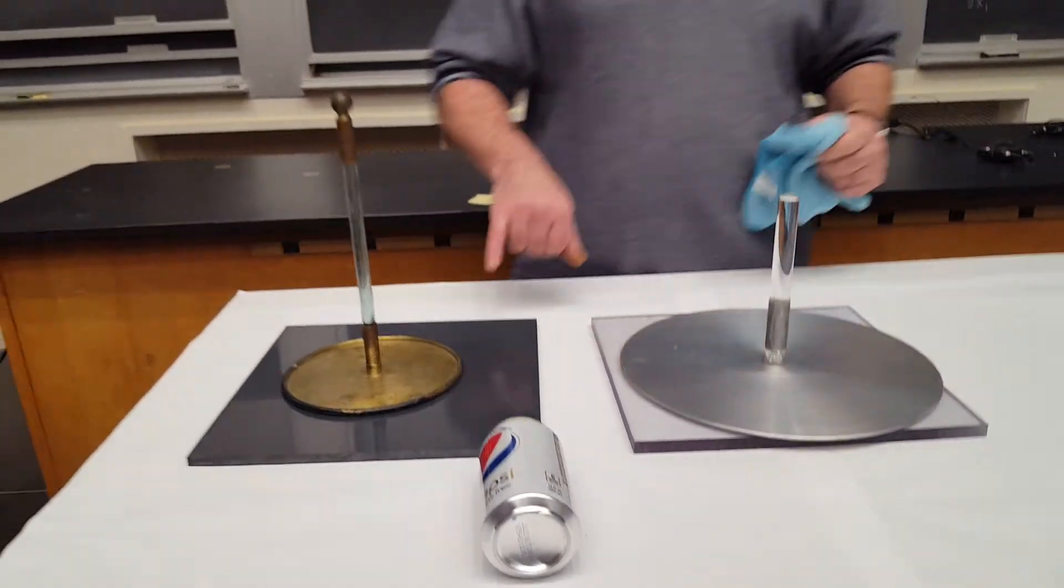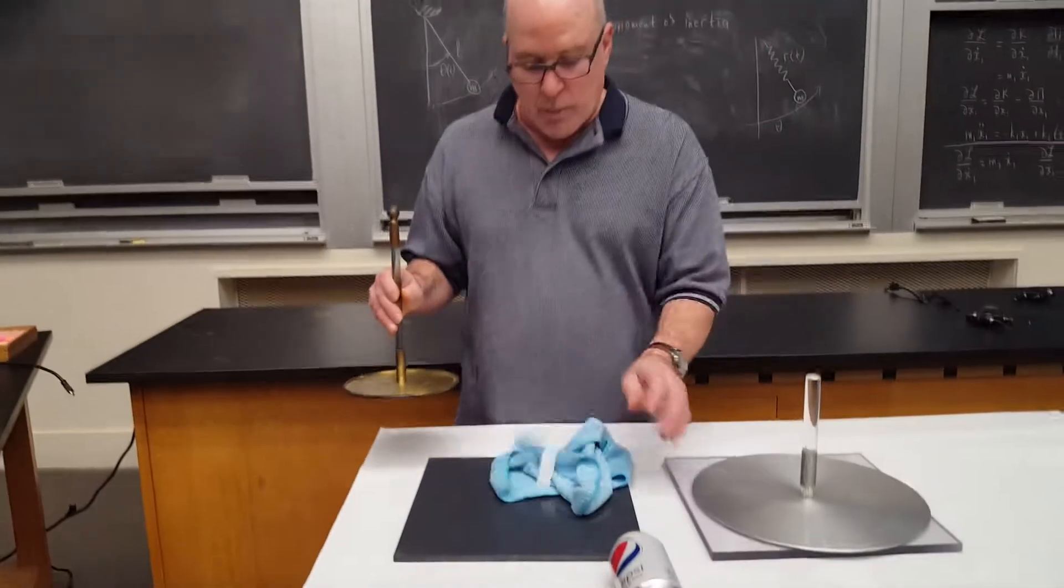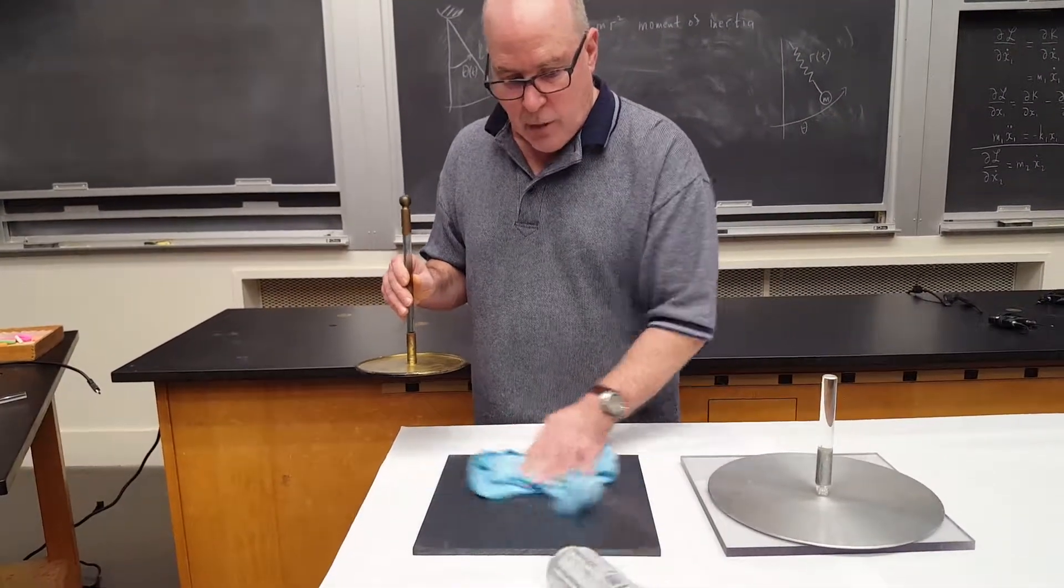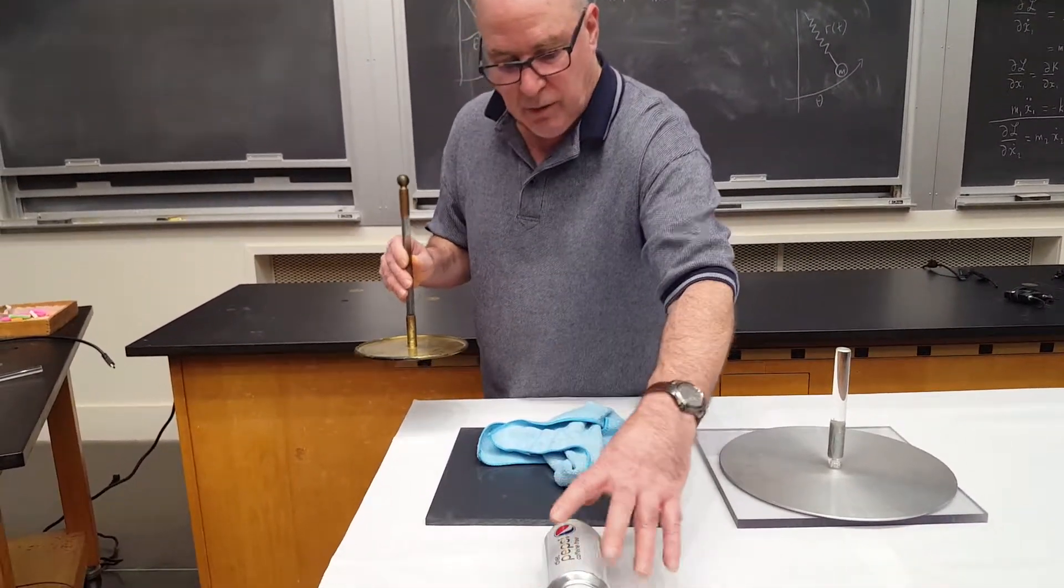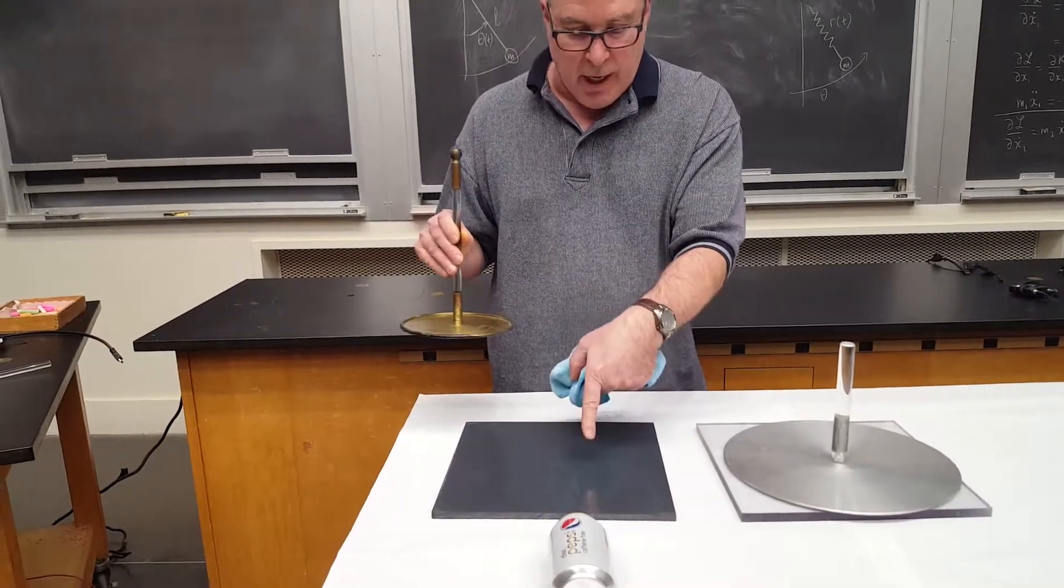Now I'm going to take a piece of PVC and I'm going to rub it with this cloth. I know from experience when I rub PVC material with this cloth this is now negative.